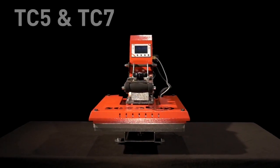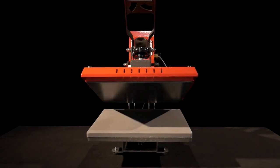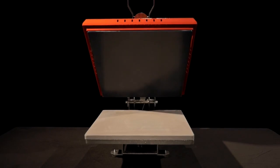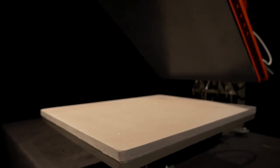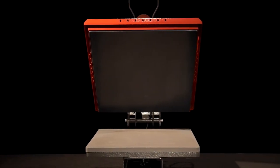The Sakabo TC5 and TC7 clam heat presses are modular, automatically opening knee lever presses with a work surface of 38cm x 38cm and 40cm x 50cm respectively.